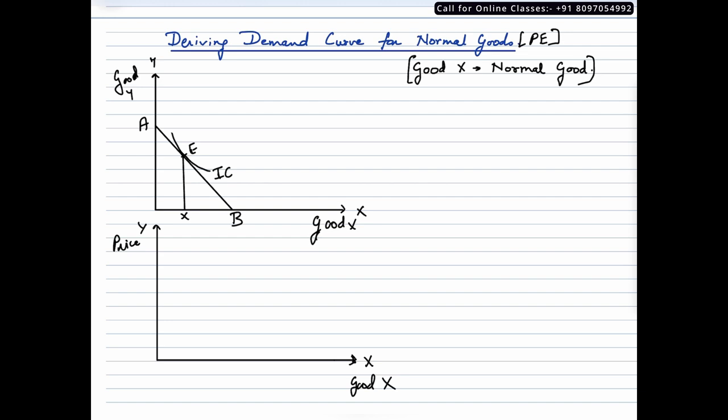we have the initial budget line which is AB, the initial indifference curve IC, and the equilibrium at point E. At point E, this consumer is consuming OX quantity of commodity X. Now let us suppose that the